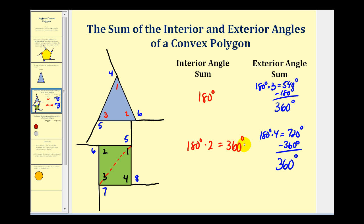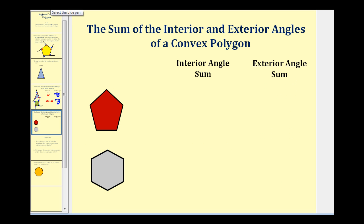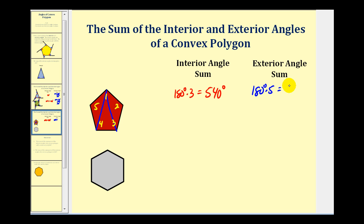Notice that the sum of the interior angles is changing, but the sum of the exterior angles stays the same. For the pentagon, we can divide the interior into three triangles, so the sum of the interior angles is 180 degrees times three, or 540 degrees. With five interior angles there are five exterior angles, forming five linear pairs: 180 times five is 900. Subtracting the interior sum leaves 360 degrees for the exterior angles again.